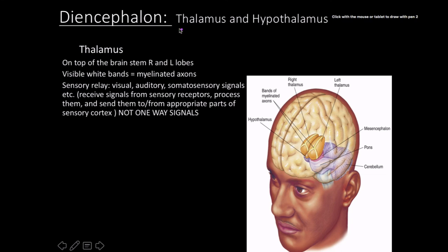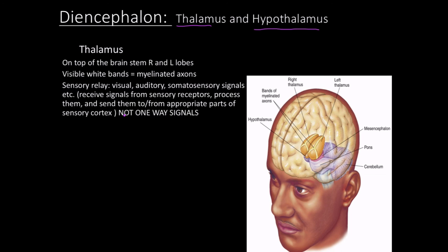The last part of the brainstem is the diencephalon. The two important structures here are the thalamus and the hypothalamus. The thalamus has a right and left lobe with visible white bands — those white bands are myelinated axons. It plays a large role in sensory relay, and it's not just a one-way signal.